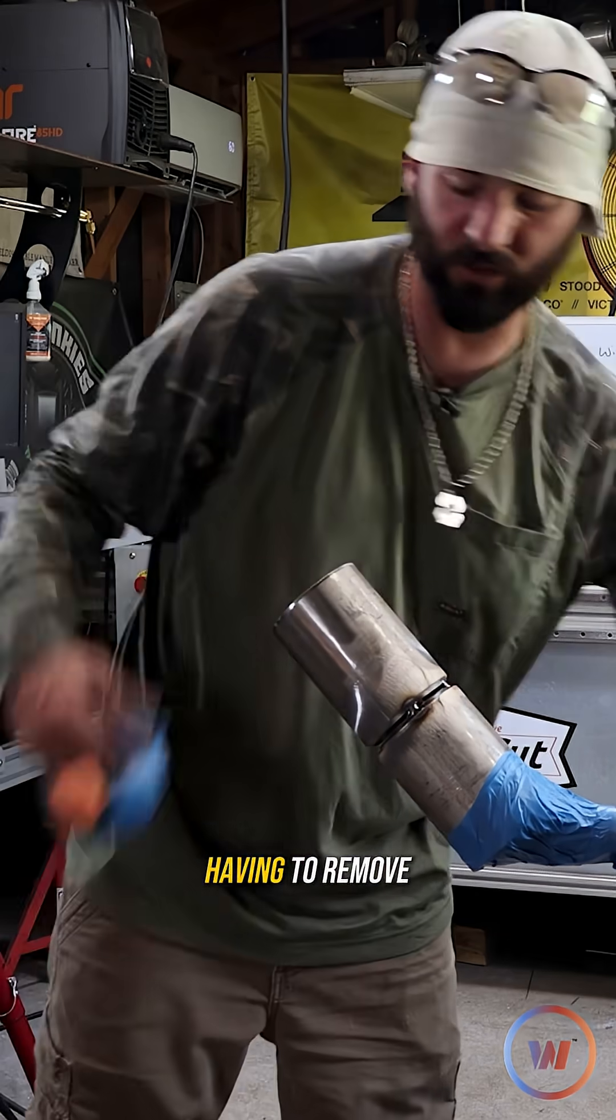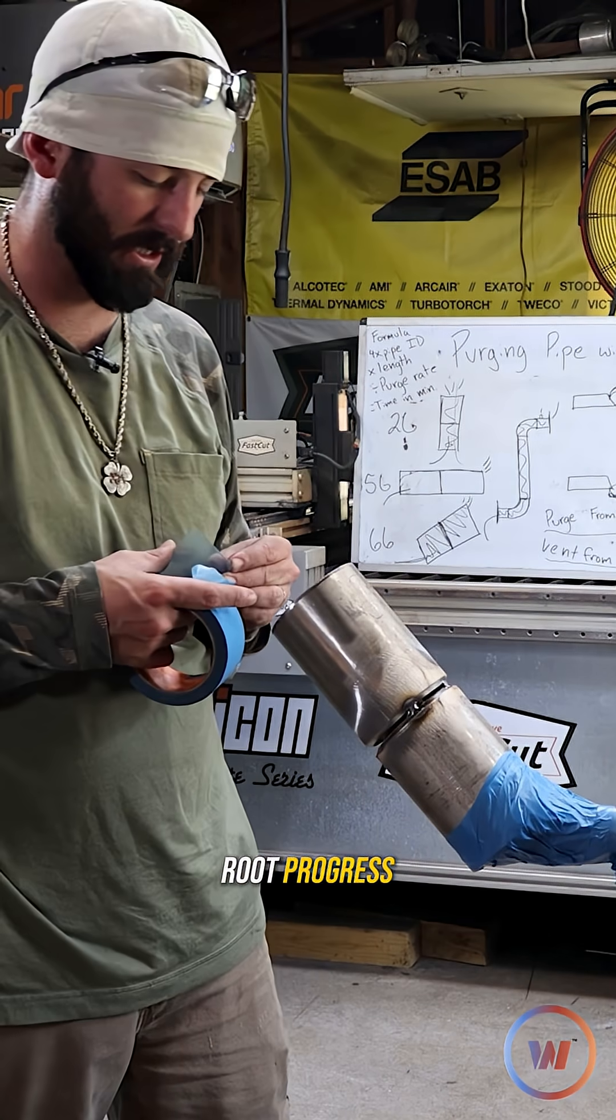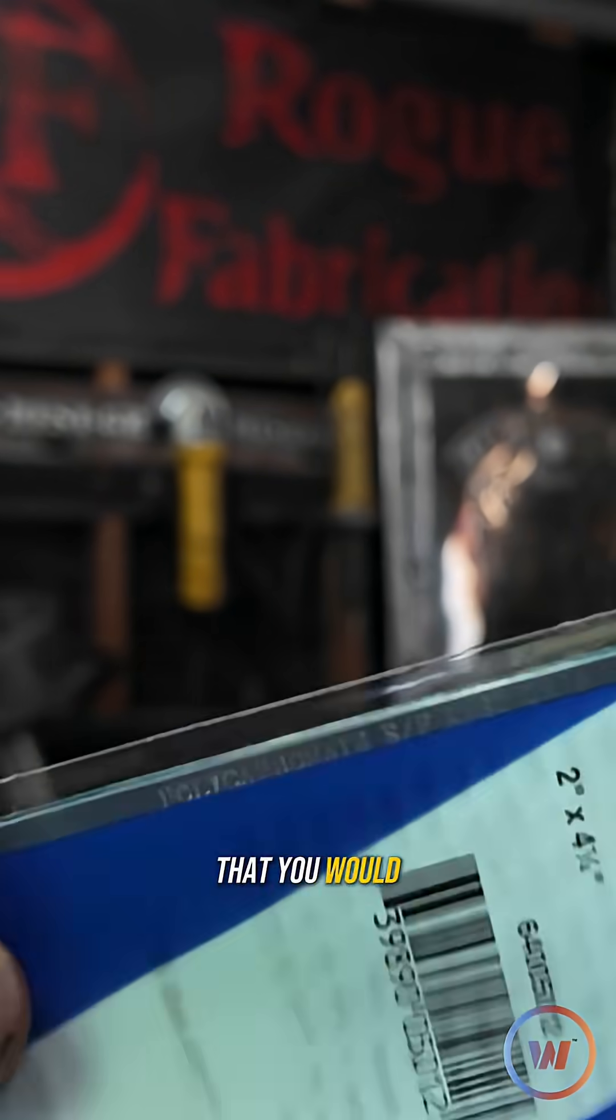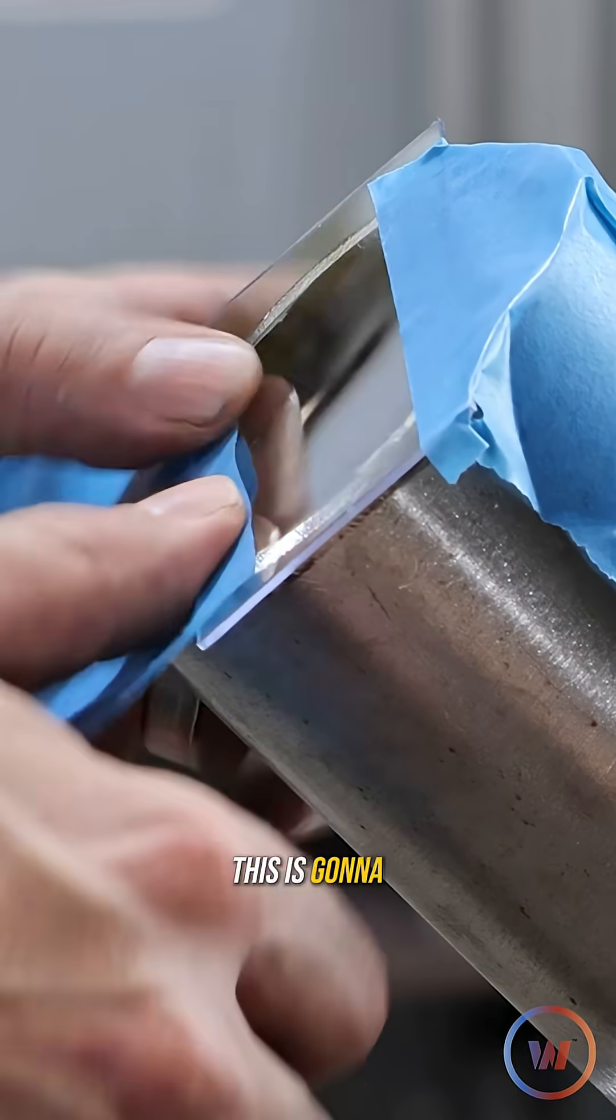I don't like having to remove the tape to look at my root progress, so I'll put a clear lens that you would typically put in your welding hood. This is going to save you so much time.